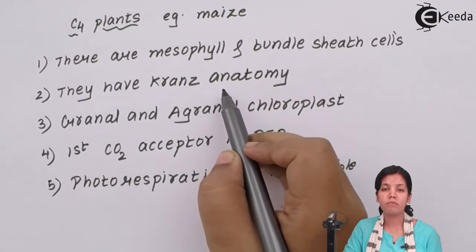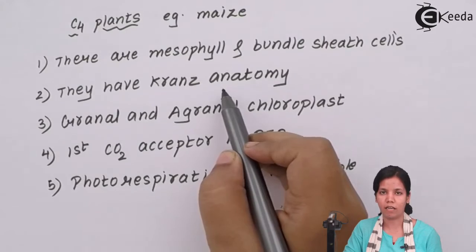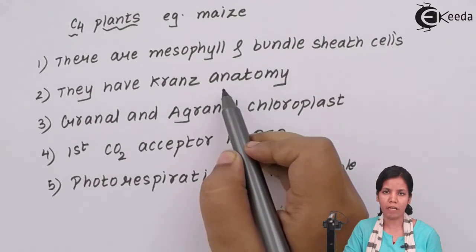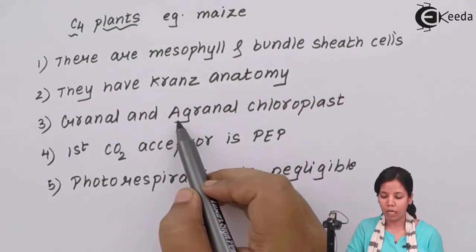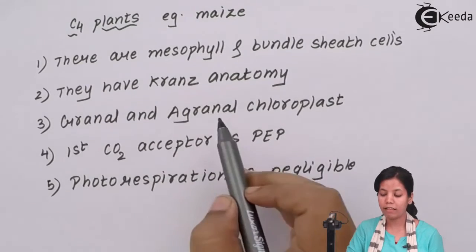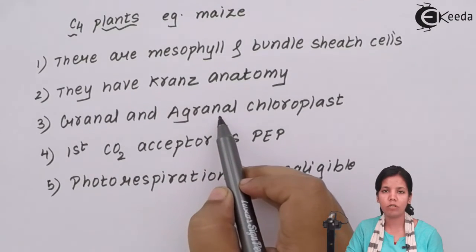They have Kranz anatomy which is widely explained and in detailed structure as compared to C3 plants which do not have. The chloroplast is of two types, the granal chloroplast and the agranal chloroplast, and these two types of chloroplasts help them to grow when the temperature increases while producing the crops.